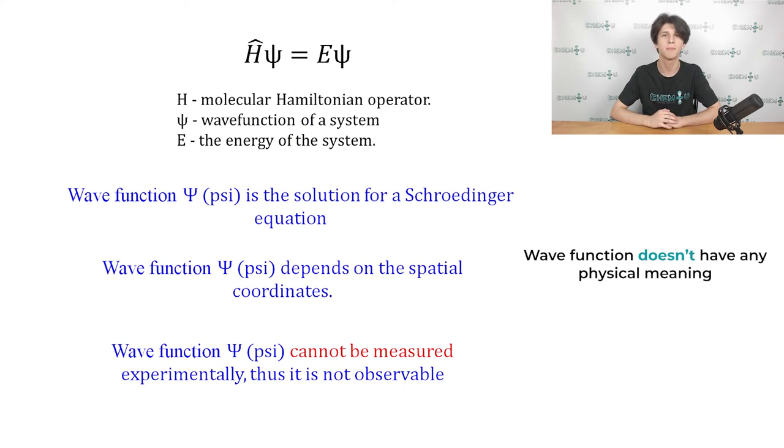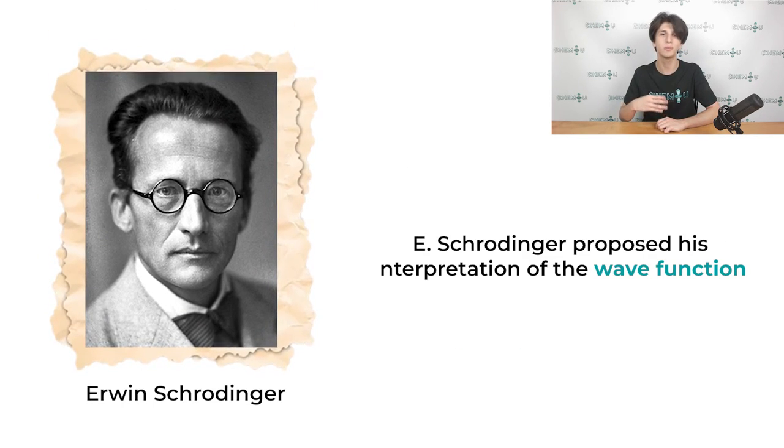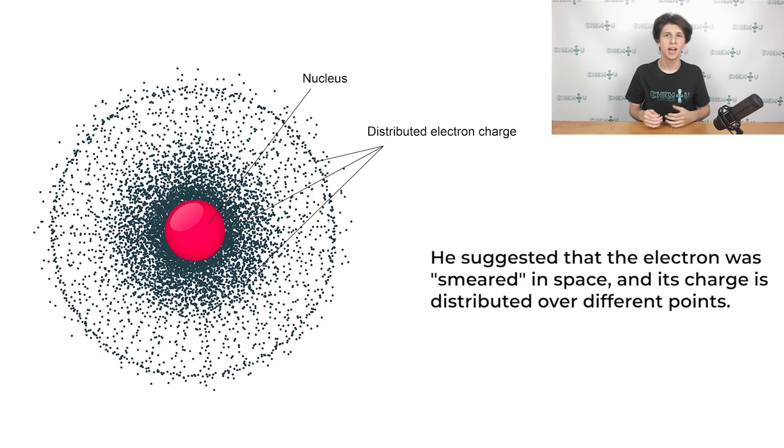It simply serves as a mathematical concept that is useful for chemists and physicists. You will learn the reason why ψ doesn't have any physical meaning during your theoretical chemistry course, but just keep it in mind for now. In contrast, the square of the wave function does have physical meaning, and it can be measured experimentally. Actually, the square of the wave function is a probability density to find an electron at a specific point. Erwin Schrödinger initially proposed his interpretation of the wave function. He suggested that the electron was smeared in space, and its charge is distributed over different points. In this case, the square of the wave function represents the charge density at each point in space.